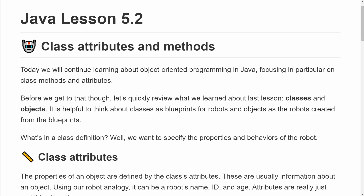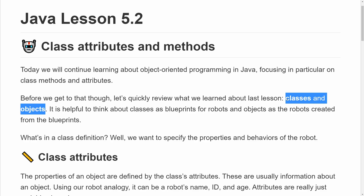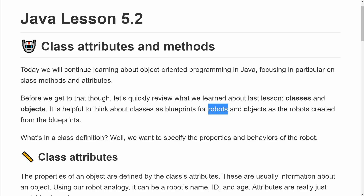Today we will continue learning about object-oriented programming by focusing on class methods and attributes. Before we get to those things, let's quickly review what we learned last lesson, which is about classes and objects. It's very helpful to think about classes as blueprints — in this case, blueprints for robots. The objects themselves are the robots we create from those blueprints, from the class definitions. In the class definition, we can specify the properties and behaviors of our robot.